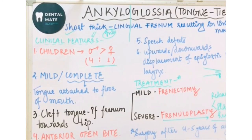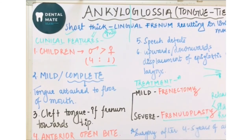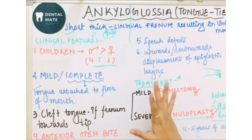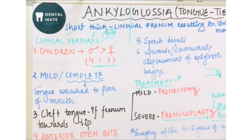Always remember: whatever surgical procedure is carried out — whether frenectomy or frenuloplasty — it should be done after 4 to 5 years of age, when the development and growth of the tongue is completed. Only after that should the surgical procedure be performed.